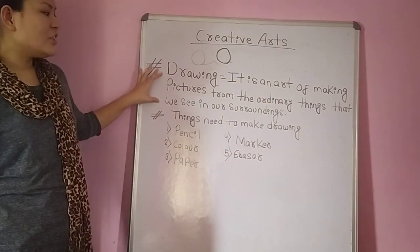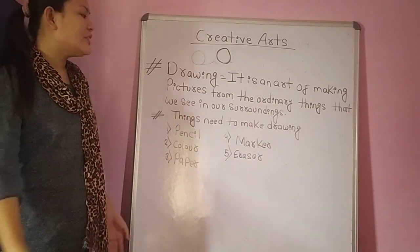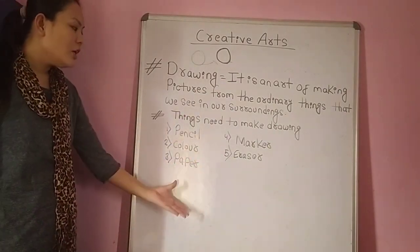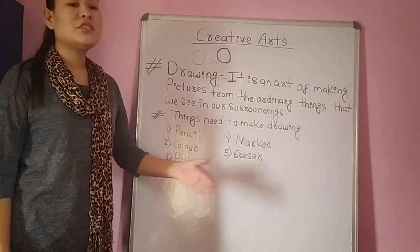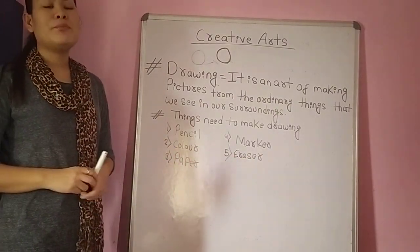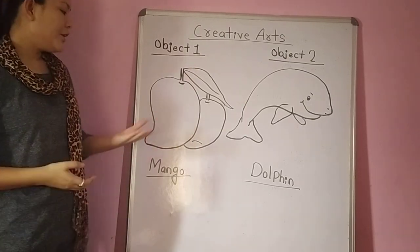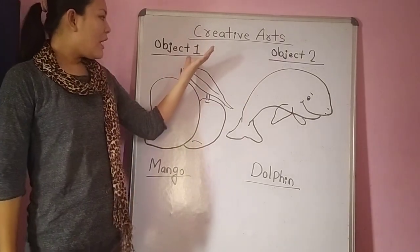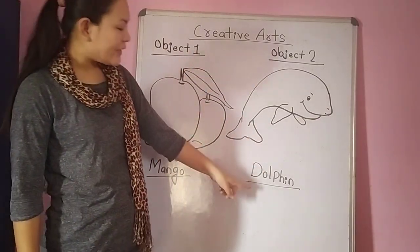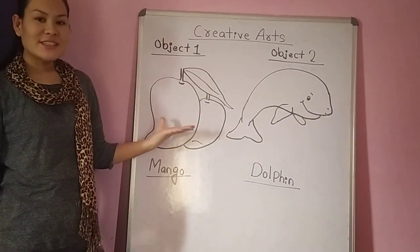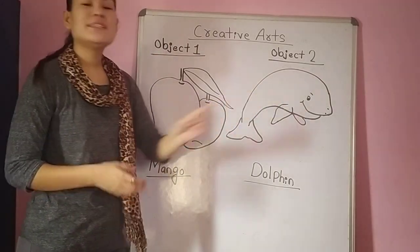Drawing is an act of making pictures from the ordinary things that we see in our surroundings, and these are the basic materials needed to make a perfect and beautiful drawing. Dear students, I have made two objects for today — object number one is a mango, and object number two is a dolphin.